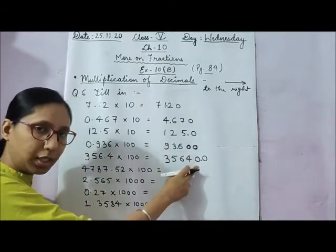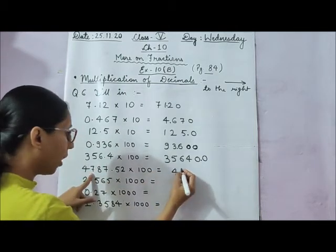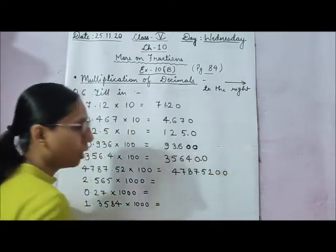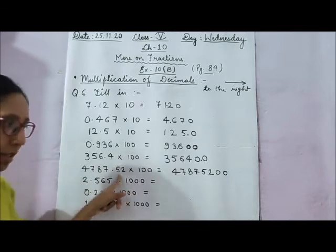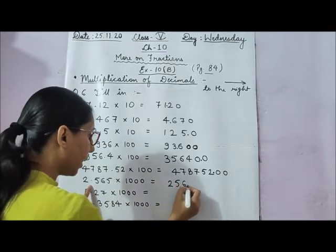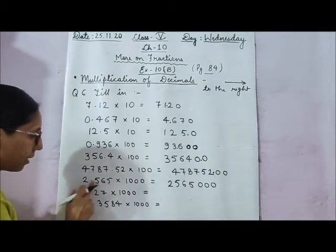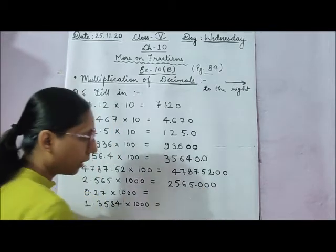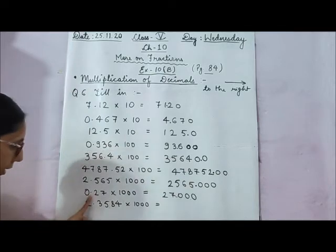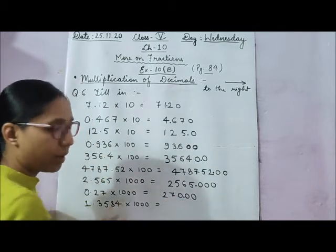So the answer is 35640.0. Similarly, for 4.787_52 multiplied by 100: write the complete number as 478752, add 2 zeros. There are 2 digits after the decimal point, so we mark 2 digits before the point. Then for 2.5650 multiplied by 1000: write 25650 and add 3 zeros. There are 3 digits after the decimal point, so count 3 and mark the point. Also, 0.27 multiplied by 1000 gives 27000, and with 2 digits after the decimal point, the answer is 270.00.